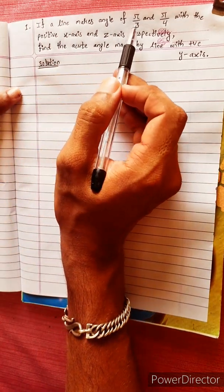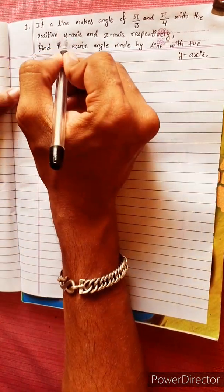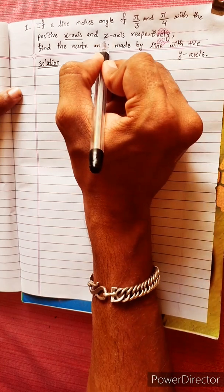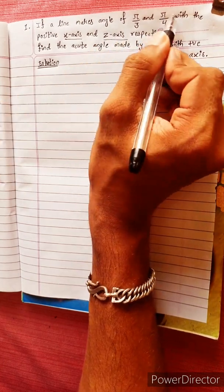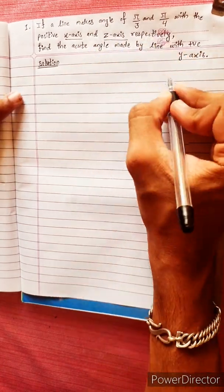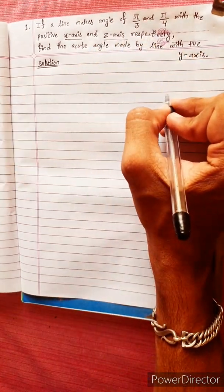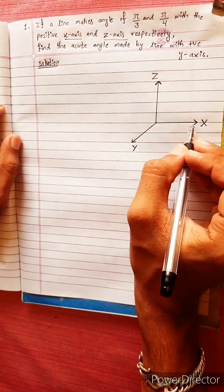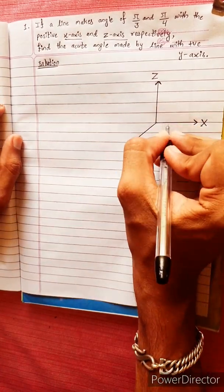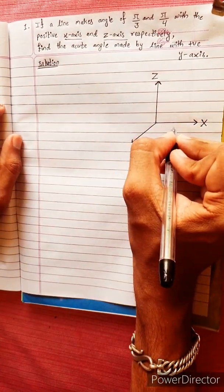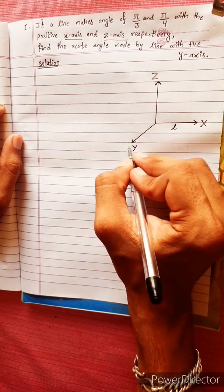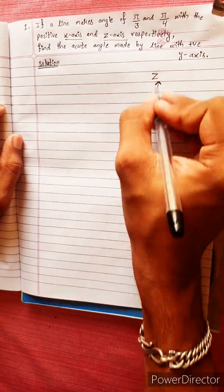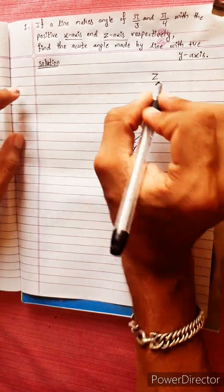If a line makes an angle with the x-axis, we will define this angle with the x-axis. Now, the x-axis, y-axis, and z-axis: x-axis will represent the direction cosine l, y-axis will represent m, and z-axis will represent n.